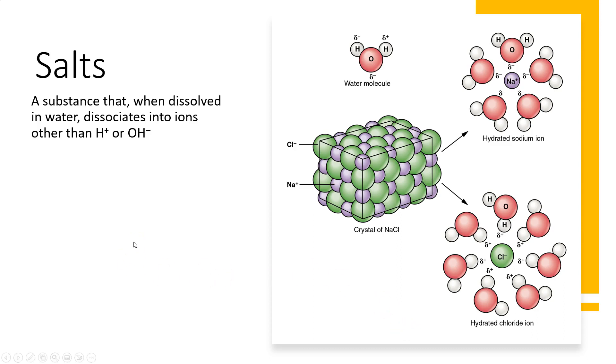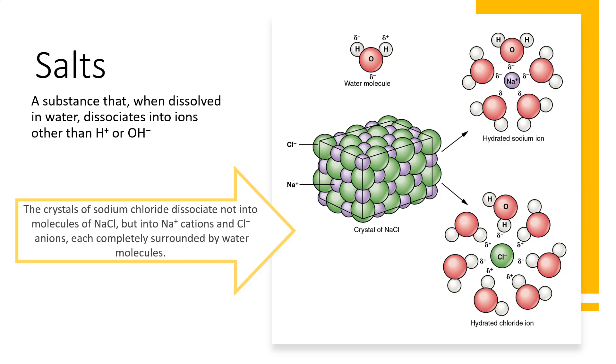We also have salts. A salt is a substance that when it's dissolved into water, it dissociates into ions other than hydrogen and hydroxyl. So in this example here we have salt crystals. When it is dissolved in water, it doesn't dissociate into molecules but rather sodium cations—positively charged ions that are surrounded by water molecules—and chloride anions, or negatively charged molecules that are surrounded by water.